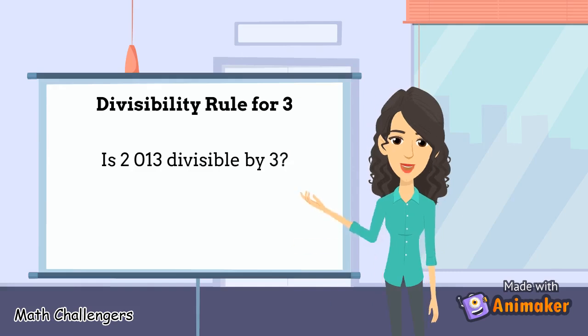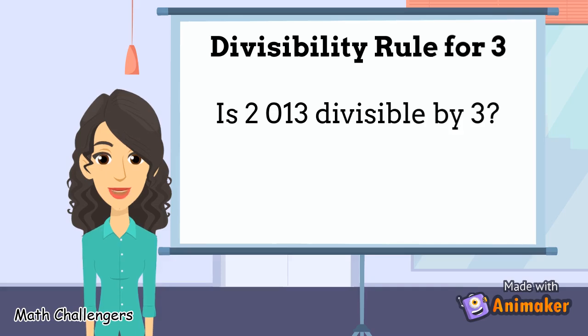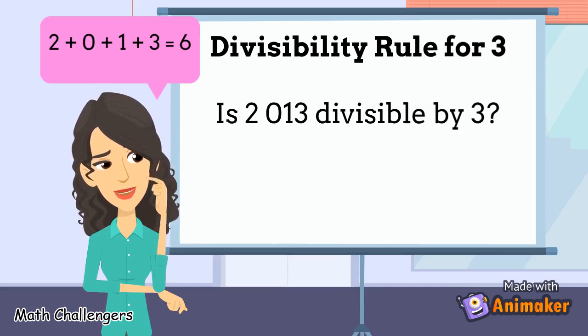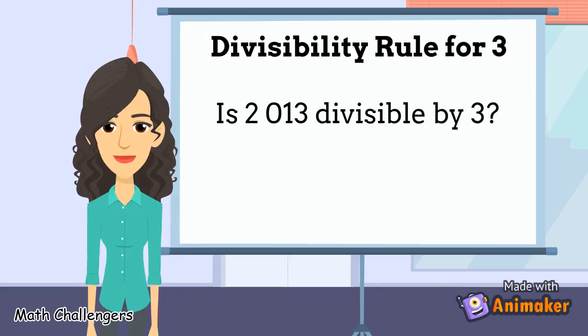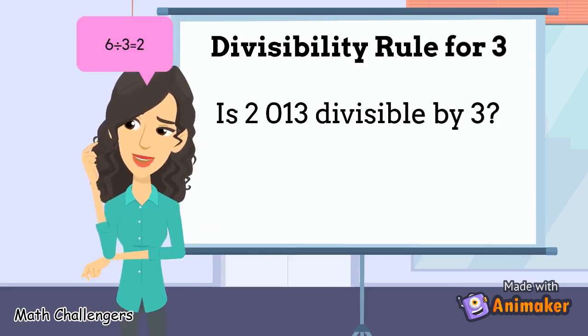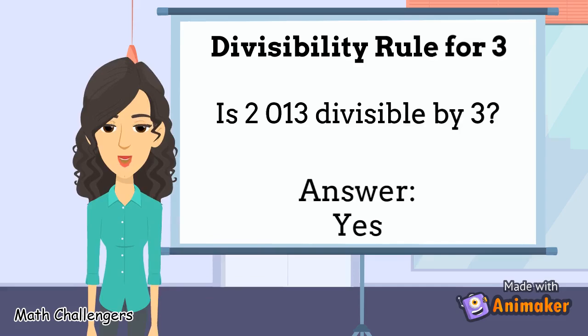Example: Is 2,013 divisible by 3? To answer this, get the sum of the digits mentally. 2 plus 0 plus 1 plus 3 equals 6. Then divide the sum by 3. 6 divided by 3 is 2. Since 6 is divisible by 3, then 2,013 is divisible by 3.